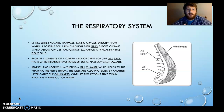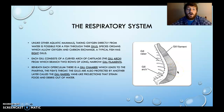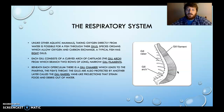The gills are special organs that allow for oxygen and carbon exchange. A typical fish has eight gills. Each gill consists of a curved arch of cartilage called the gill arch — you can see the cartilage here. There will be two rows of long, narrow gill filaments. These filaments are kind of like the filter. Beneath this operculum — and I don't have it pictured here — there's a gill chamber which leads to the pharynx, which leads to a fish's throat.